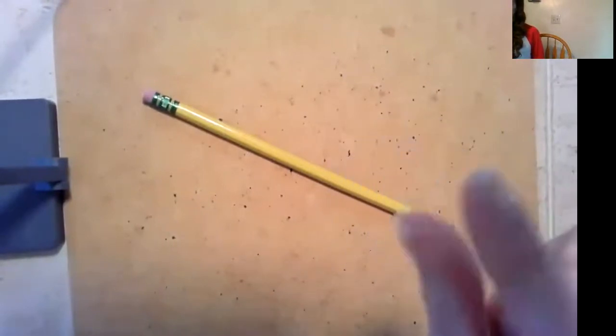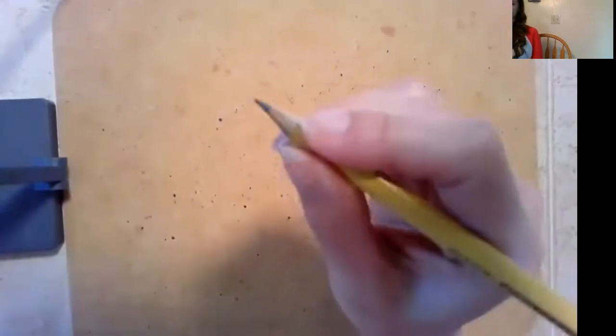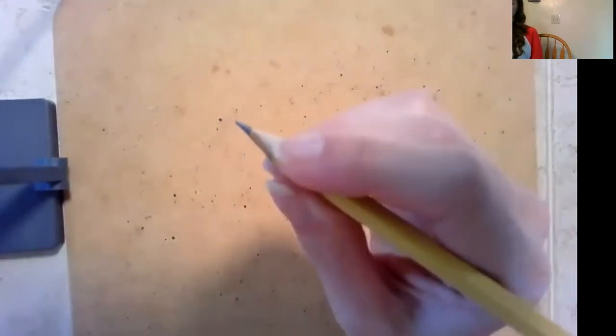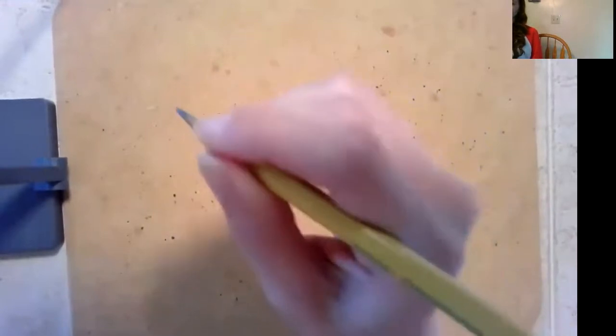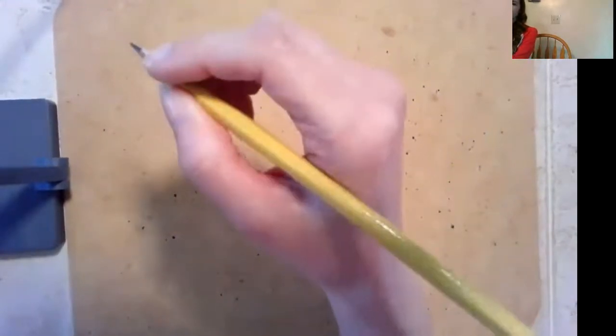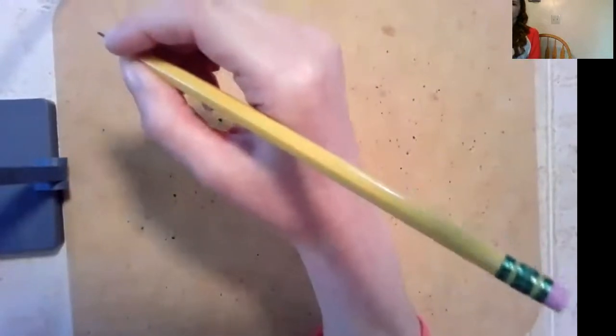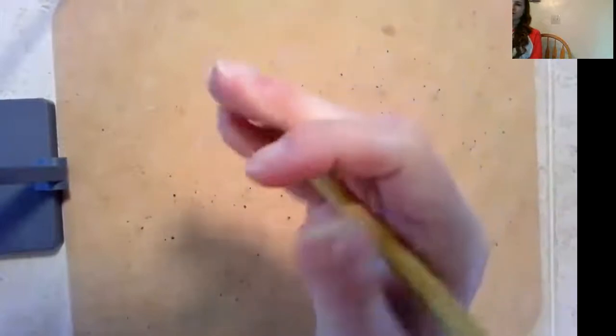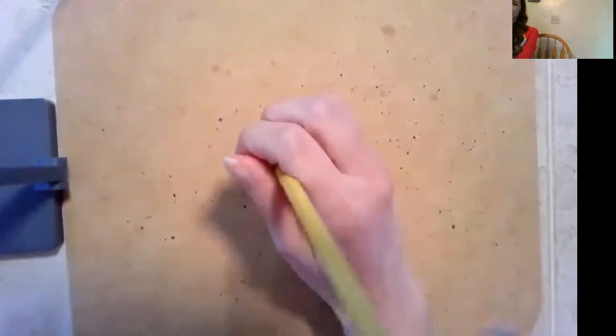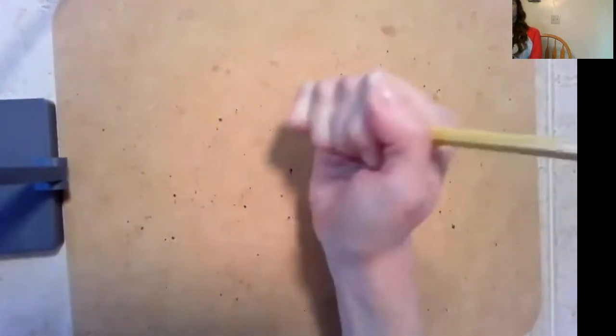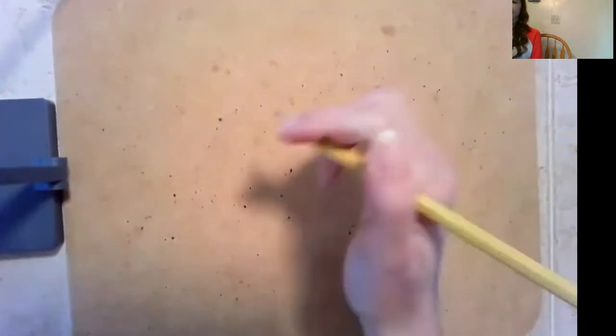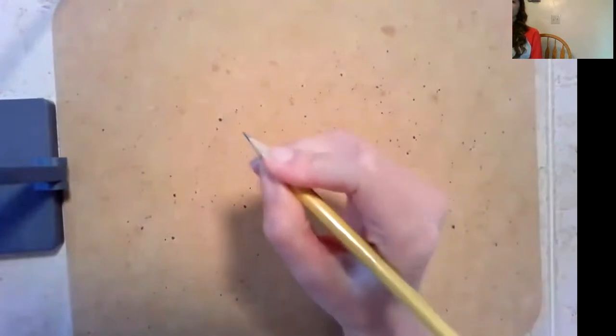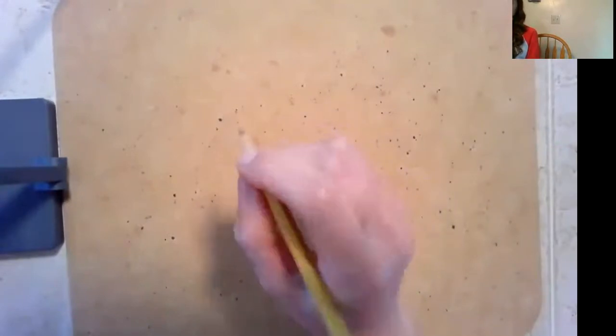When you're holding it should look like this: your thumb and your pointer finger pinch it, you rest on your other fingers, and then the end of your pencil kind of rests back on your hand. We're not doing any fist holds or some crazy two finger holds because when you're writing trying to hold it with a fist, you don't have a lot of control and you can't write very neatly. So we're always going to pinch.